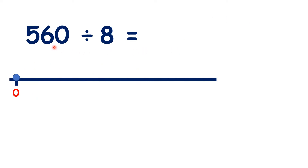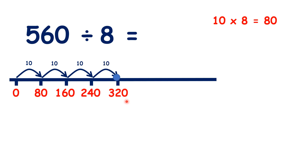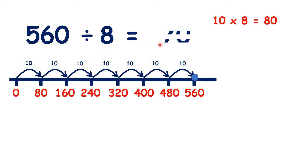So what is 560 divided by 8? Again, we can count up in steps of 10 times 8 each time: 80, 160, 240, 320, 400, 480, and 560. So because we counted 7 steps of 10 times 8, our answer must be 70.